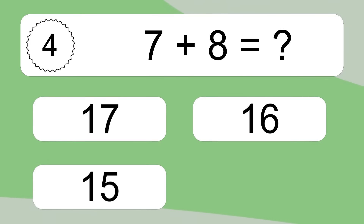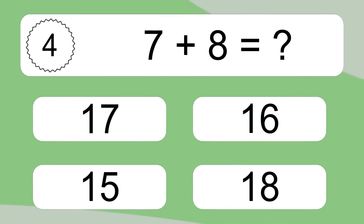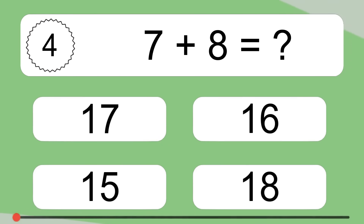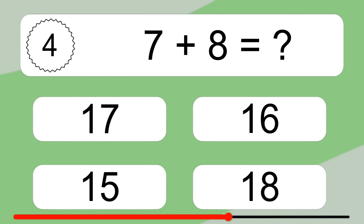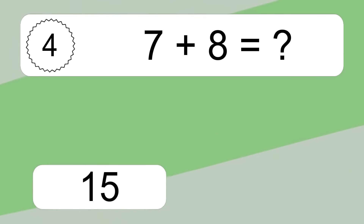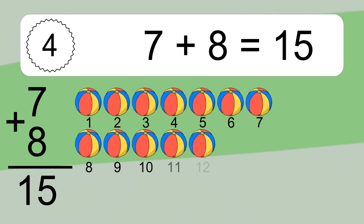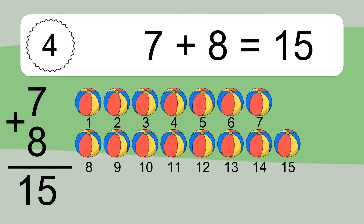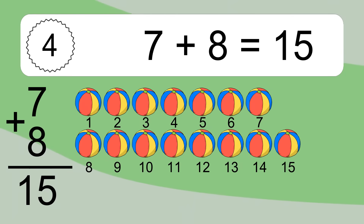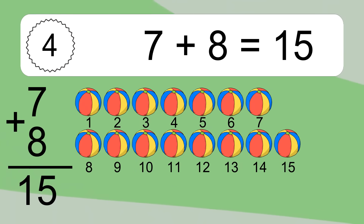7 plus 8 equals what? 7 plus 8 equals 15. Let's count it: 1, 2, 3, 4, 5, 6, 7, 8, 9, 10, 11, 12, 13, 14, 15.